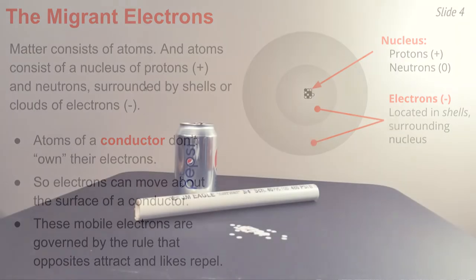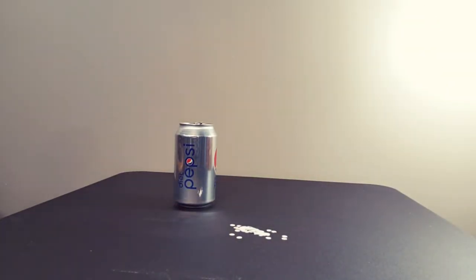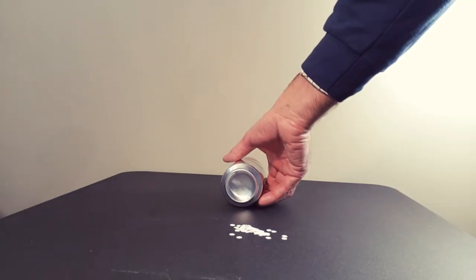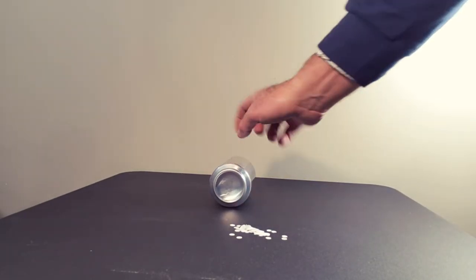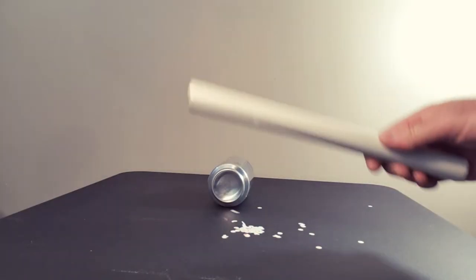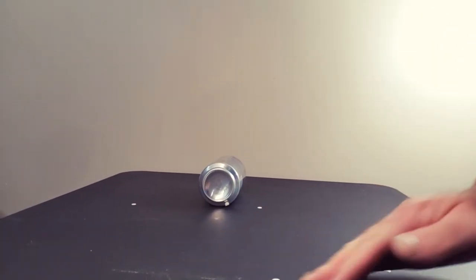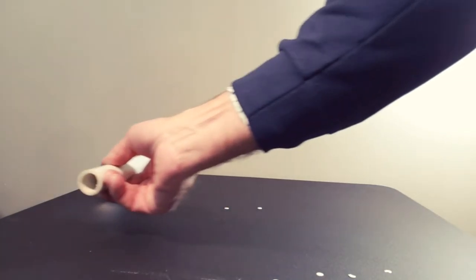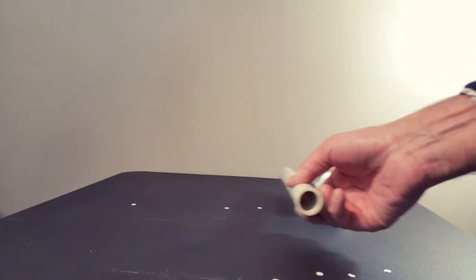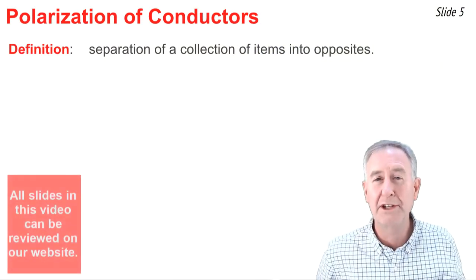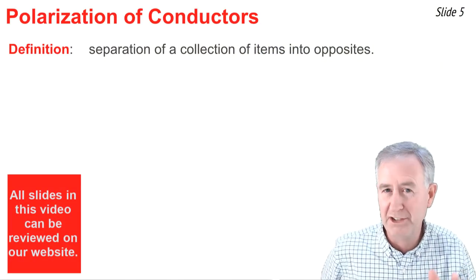Let me demonstrate. This demonstration involves a metal pop can, a PVC tube, and some paper bits. I'm going to begin by bringing the pop can near the paper bits — there's no interaction, so this pop can is neutral. It's also a conductor, which means its electrons are free to move about its surface. Now I'm going to rub the PVC tube on some wool, then bring it near the paper bits — a clear interaction. Then watch as I do the following. We can explain this demonstration through use of the concept of polarization.